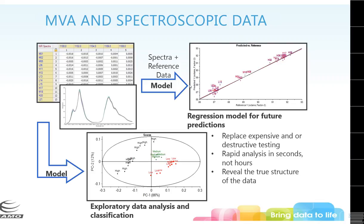With multivariate data analysis on spectroscopic data, you can use it for exploratory data analysis and classification — for example, identifying different types of raw materials or media. It also allows you to combine spectroscopic data with laboratory reference data to build regression models for prediction. This lets you replace expensive or destructive testing such as HPLC, which looks at degradants or active drug ingredient content in tablets. Because Raman is so fast, you get your analysis in seconds rather than hours or weeks, saving time and money.